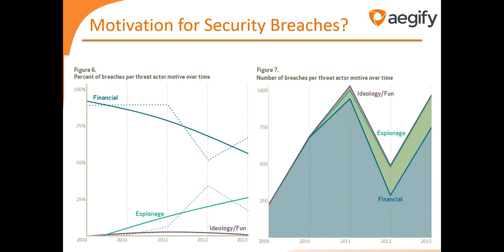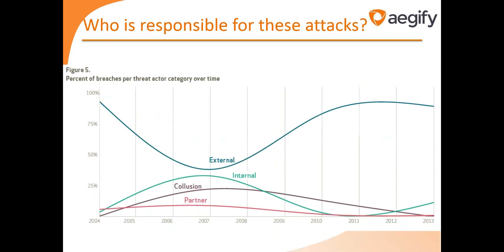What is the motivation for these breaches? A trending graph shows how things have changed over the years. Earlier it was financially motivated; now espionage-driven attacks are growing and will likely cross over with financial-driven ones in the 2015–2016 timeframe. Overwhelmingly, it is the external attacker driving most of these breaches, and that will continue.